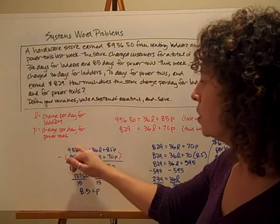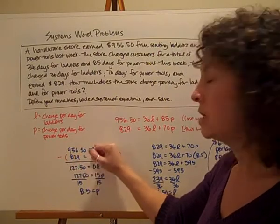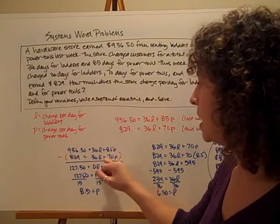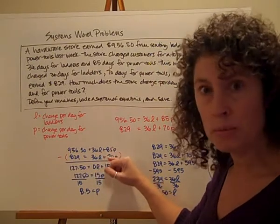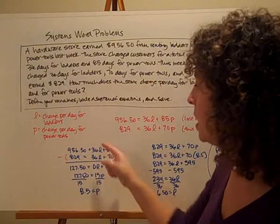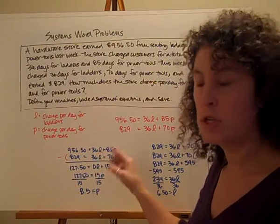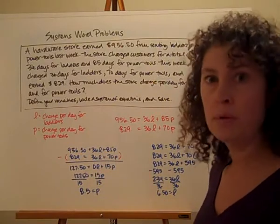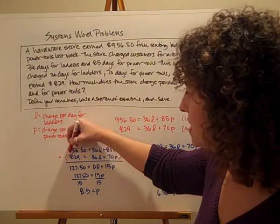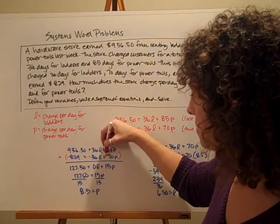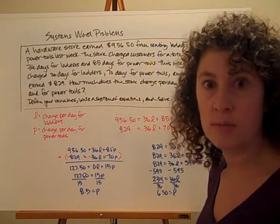I want to notice that my constants are aligned, my equal signs are aligned, my L terms are aligned, my operation is aligned, and my P terms are aligned here when I set that up. Because these have the same coefficient, I want to subtract. I'm going to change subtracting to adding the opposite. So I'm going to change this to adding. I'm going to make this a negative 829, a negative 36, and a negative 70p.